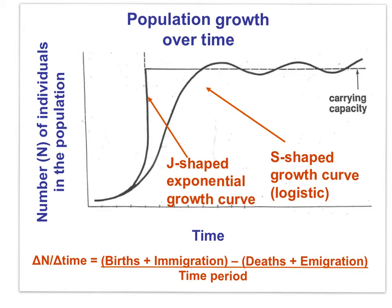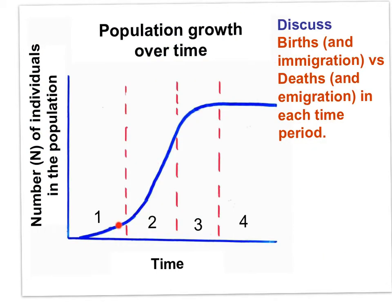The growth in any population is purely a function of births and immigration balanced against deaths and emigration. The change in population size over time — delta N over delta T — is due to the relative rates of births, deaths, immigration, and emigration. In time period 1 the population grows slightly. In time period 2 the difference between births and deaths is greater. In time periods 3 and 4, the difference between births and deaths is quite small, approaching zero, so the population no longer grows.